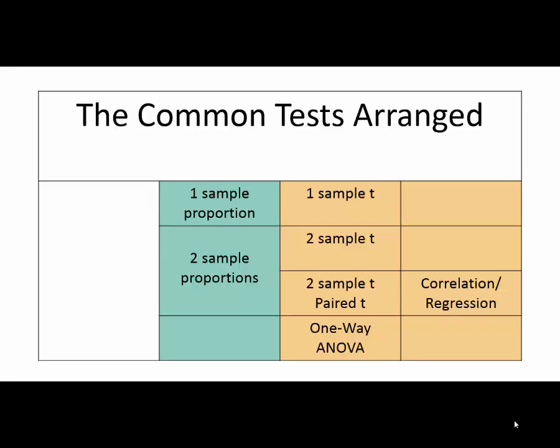I've regrouped the tests in a new arrangement. You'll notice that one of the tests, the two-sample t-test, is listed twice — but I'll explain why in a moment. The big question is: how do I determine which test is most appropriate for my research? To figure that out, we're going to ask ourselves three smaller questions about the study we're hoping to do.